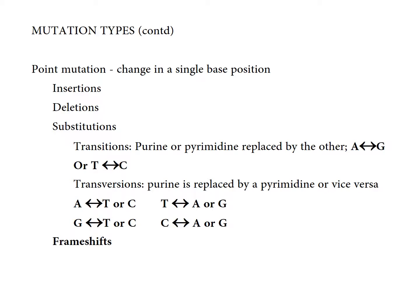Substitutions can be of two types: transitions or transversions. In transitions, a purine is replaced by another purine, or a pyrimidine is replaced by another pyrimidine. In transversions, a purine is replaced by a pyrimidine or vice versa — for example, adenine or thymine being replaced by cytosine. You can also have mutations that shift the reading frame, changing the way the information was originally being read.